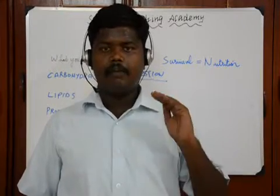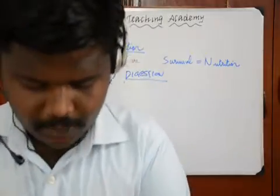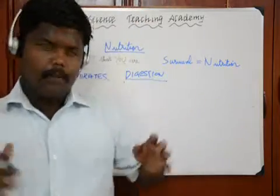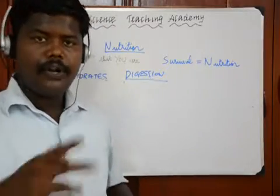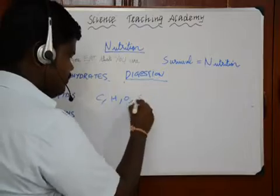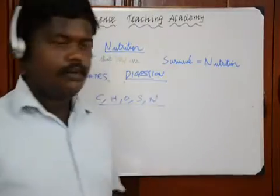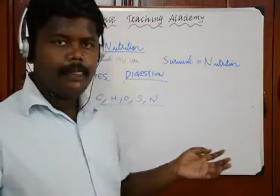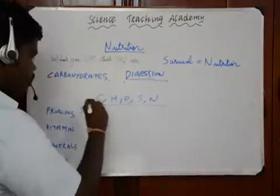How do we classify proteins? Unlike carbohydrates which are made up of carbon, hydrogen, and oxygen, proteins have additional elements: carbon, hydrogen, oxygen, sulfur, and most importantly nitrogen. These are the constituents of protein.